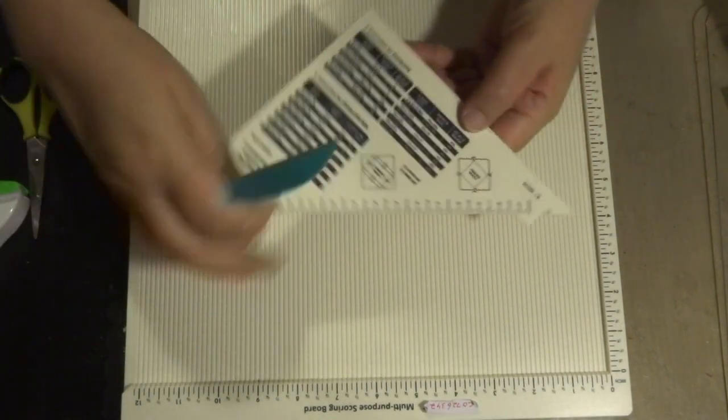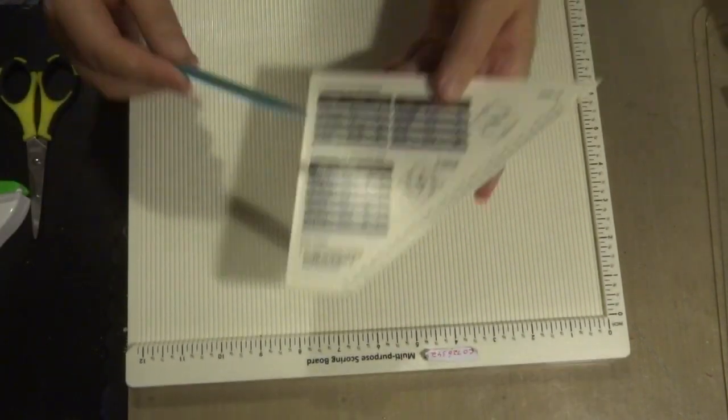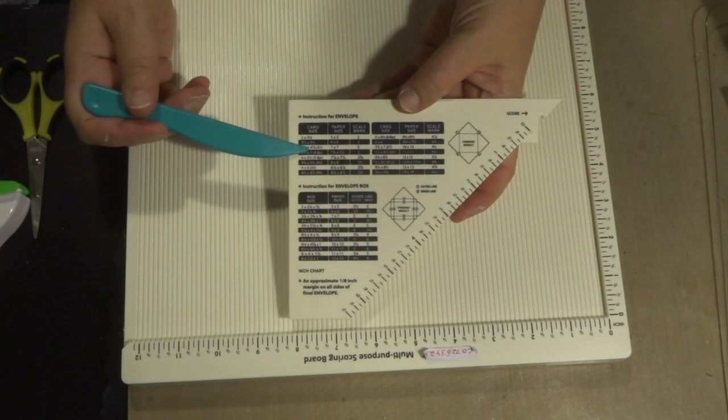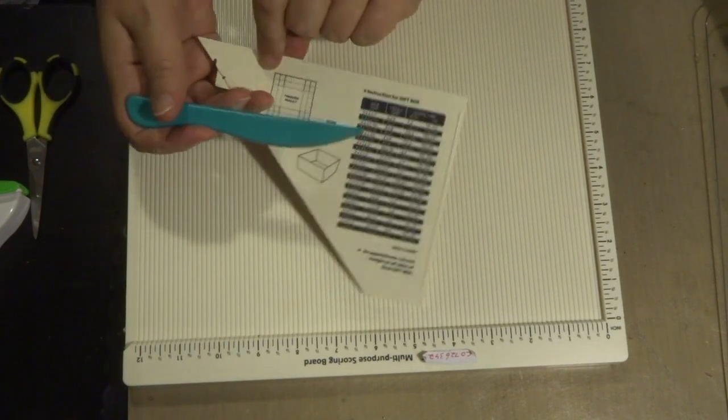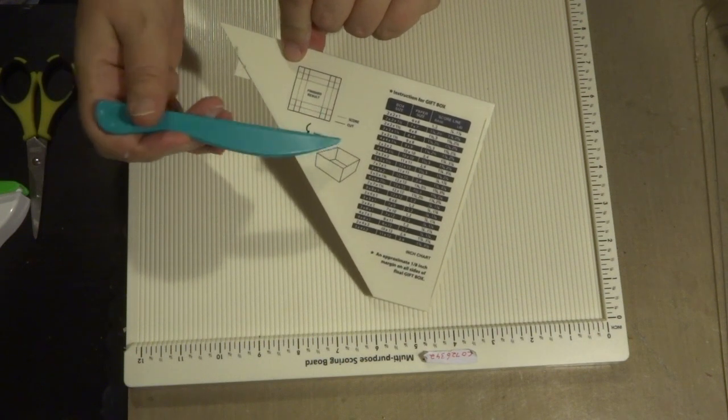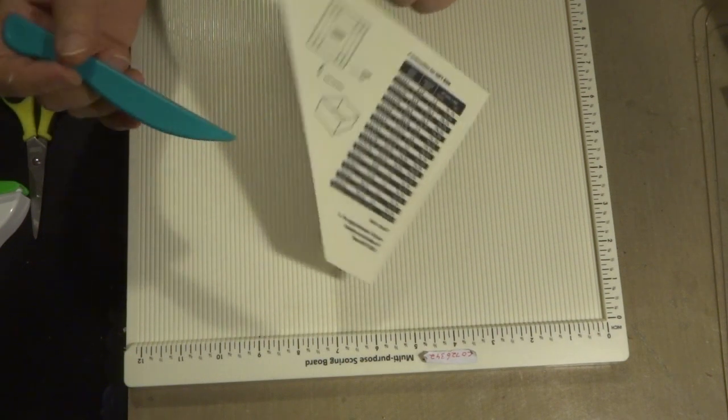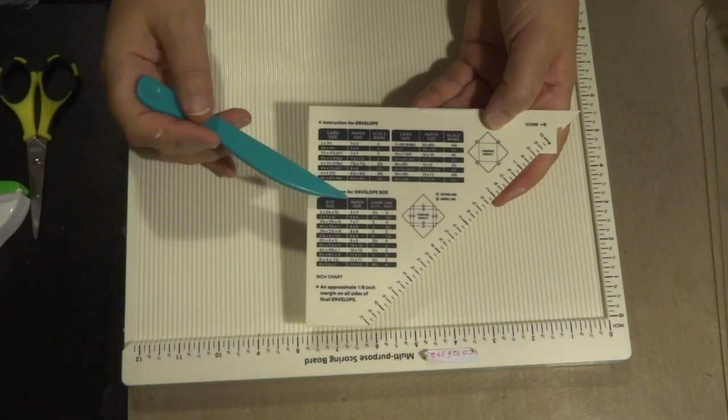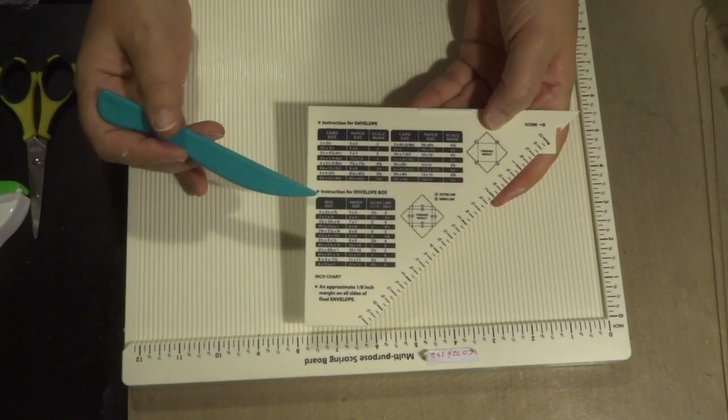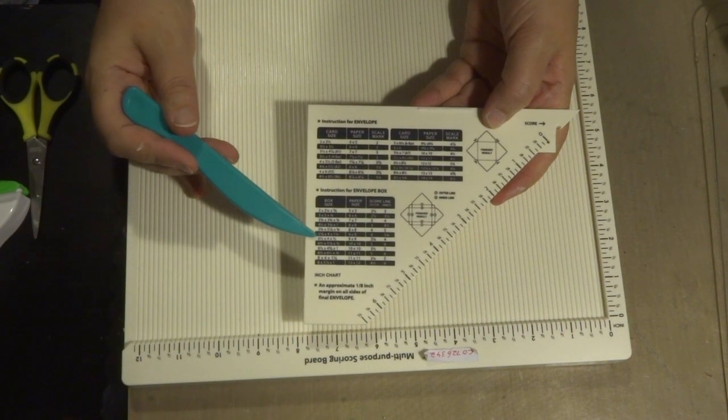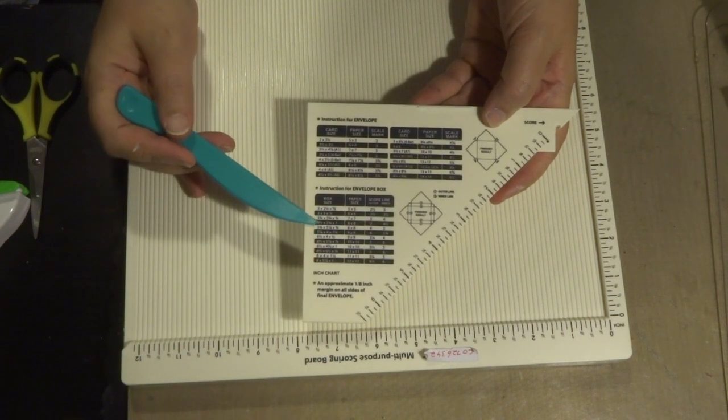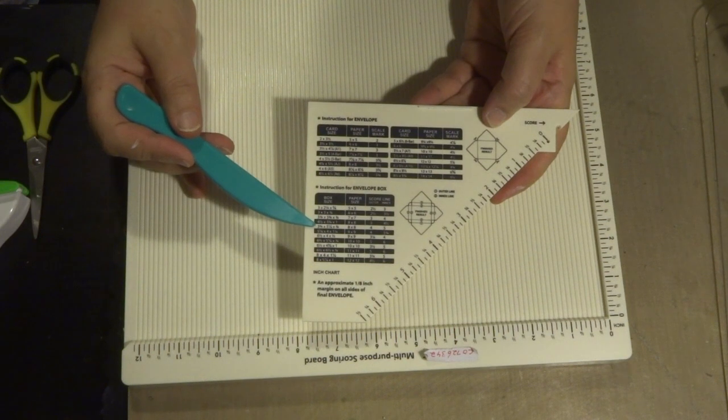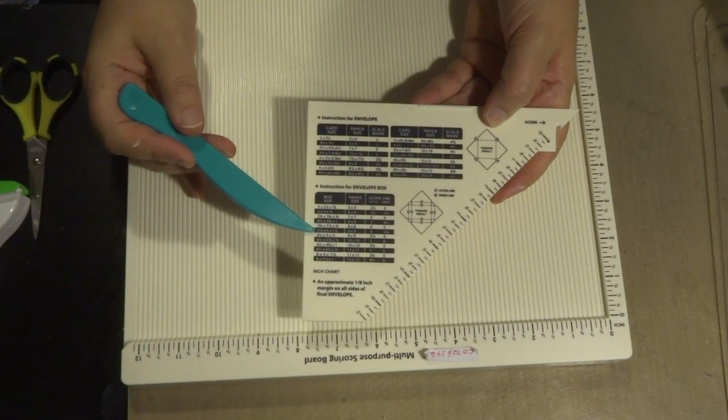This template has measurements to create envelopes and also boxes with lids and tops, and also instructions on doing a box envelope which I'm doing now. For the card size I have, I look down here to see what kind of card fits in that. I never go to the size of what the card is, I always go up.